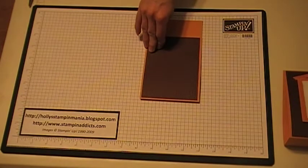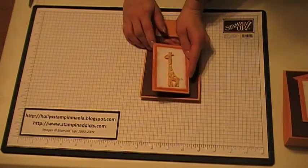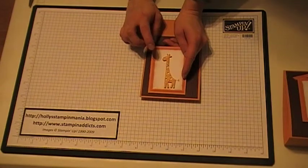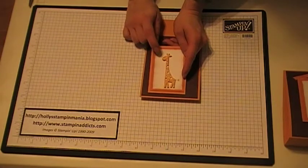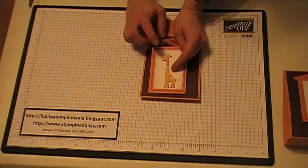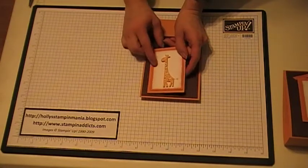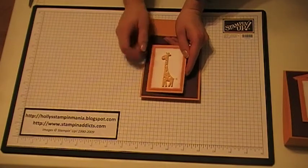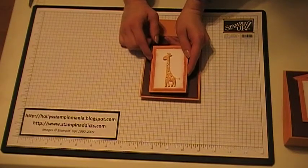The next thing I did is I took the giraffe from the Wild About You stamp set and I stamped the giraffe in more mustard on a piece of whisper white that is two by three. Then on a scratch piece I stamped another giraffe and I punched out the little holes and then I attached them on top of it with the dimensionals.